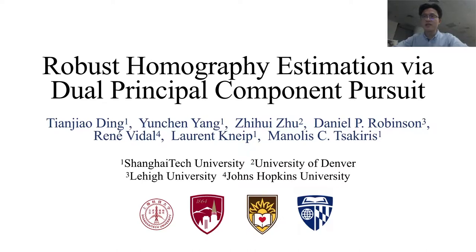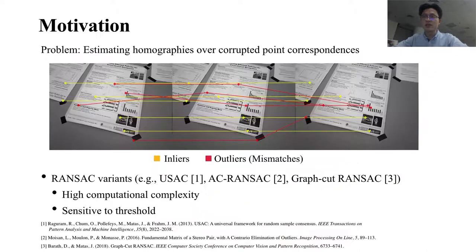This paper addresses the problem of estimating homographies over point correspondences between two or three views in the presence of noise and mismatches. Previous state-of-the-art methods include RANSAC-based methods, which have high complexity or are sensitive to threshold choice.